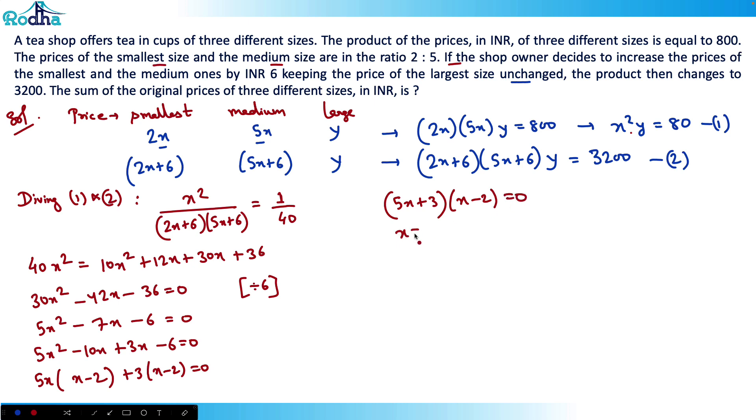That means x = 2 or -5/3. The price cannot be negative, so you can cancel this -5/3. Therefore, x = 2.